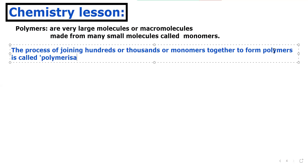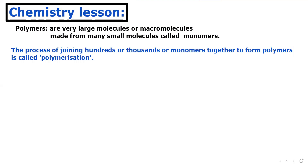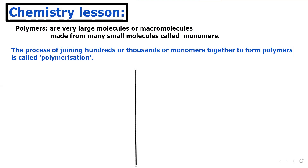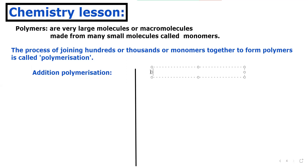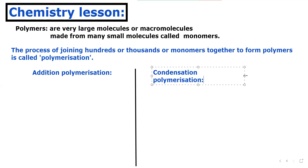Now we will talk about how many types of polymerization there are. There are basically two main types: addition polymerization and condensation polymerization.